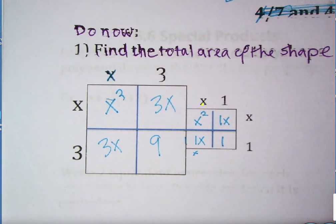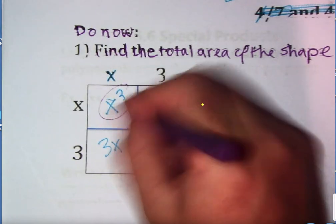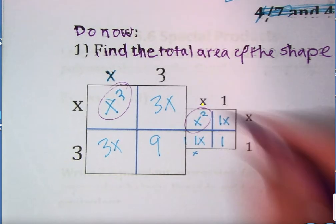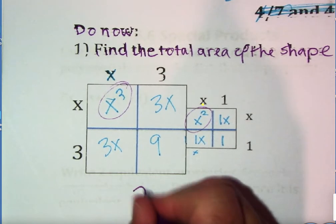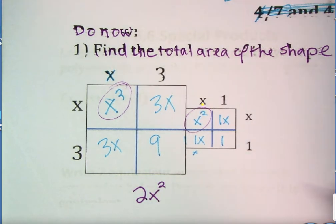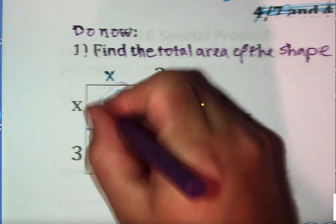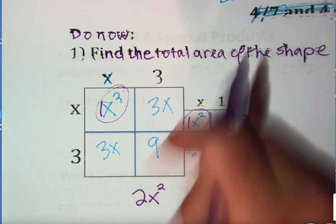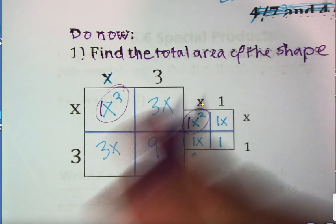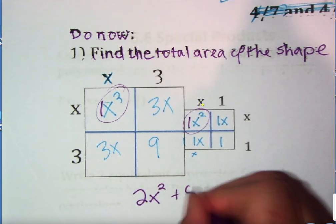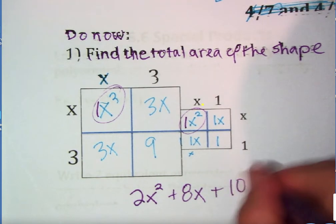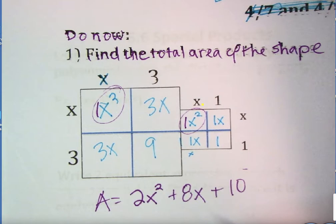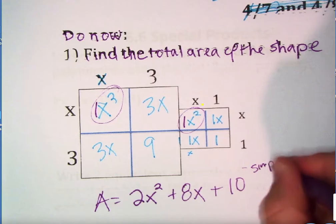We want to find the total area, so that means adding up the whole area in any like terms. We have x squared plus x squared. Don't get tricked. We add the coefficient and keep the variable part the same. So 1x squared plus 1x squared is 2x squared. 3x plus 3x plus 1x plus 1x, total of 8x's. And 1 plus 9 plus 1 is 10. That is the area of the total shape if you make it as simple as possible. This is simplified.